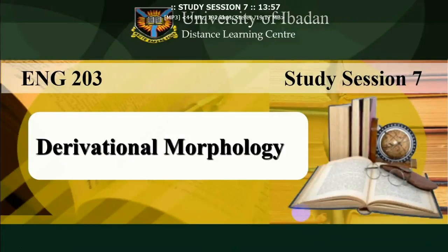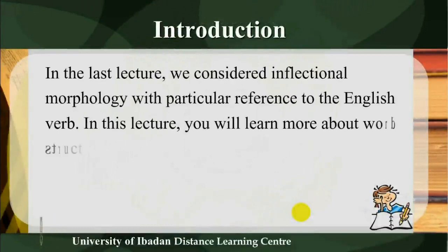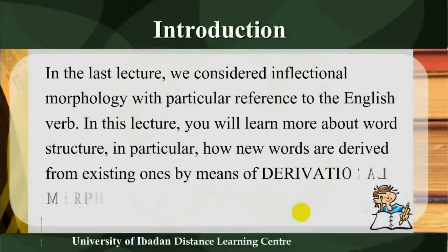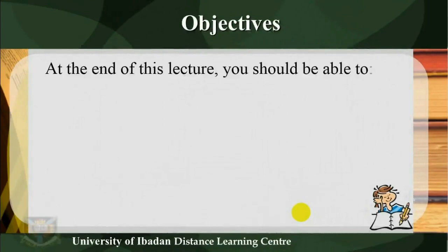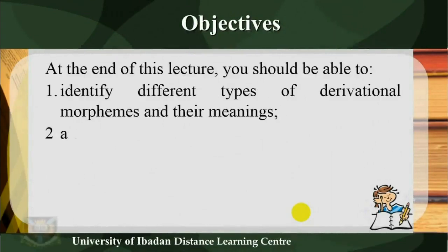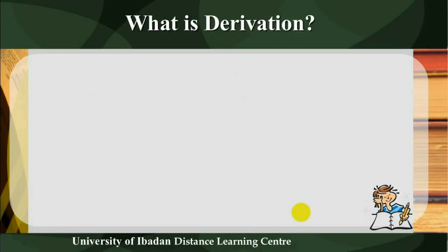Study session 7: Derivational Morphology. Introduction: In the last lecture we considered inflectional morphology with particular reference to the English verb. In this lecture you will learn more about word structure, in particular how new words are derived from existing ones by means of derivational morphemes. Objectives: at the end of this lecture you should be able to identify different types of derivational morphemes and their meanings, analyze the structure of derived words like nouns, verbs, adjectives, and form new words from existing words in English.